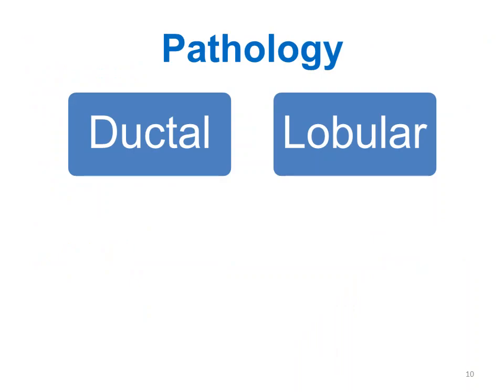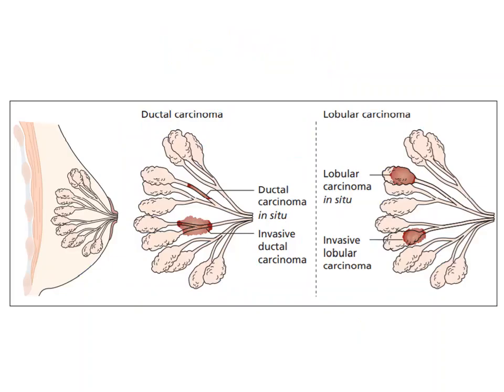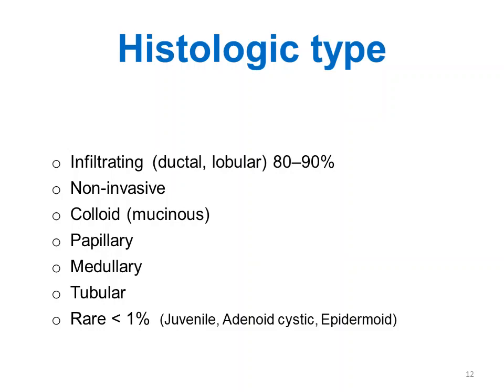Breast cancer is histologically either ductal carcinoma or lobular carcinoma. Ductal cancer arises from the large or intermediate-size ducts, and lobular carcinoma from the terminal ducts of the lobules. Either may be invasive or in situ. The different histological types include infiltrating carcinoma, invasive colloid, papillary, medullary, tubular, and juvenile types, but the most common is the infiltrating type.